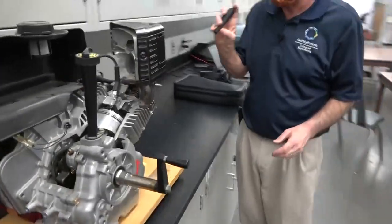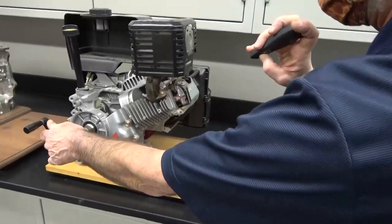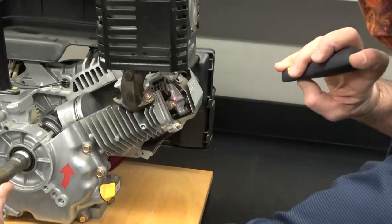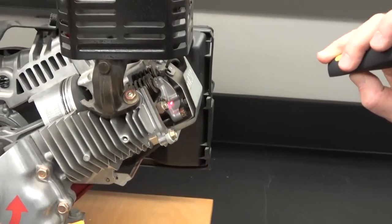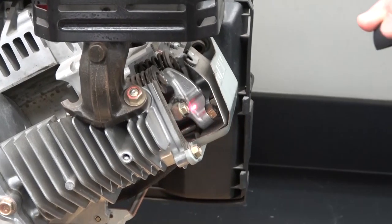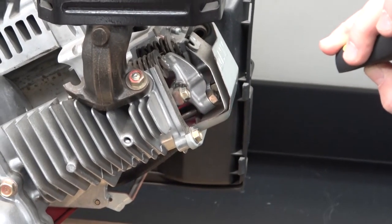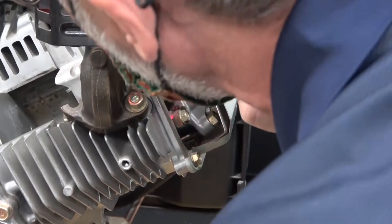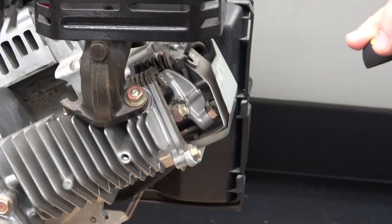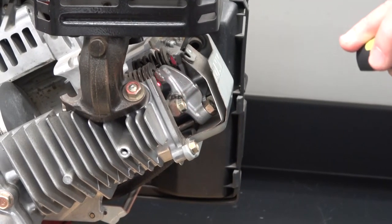If we come around to this side, we can see the top portion of the valve train. Here's the rocker arms and the push rod. As we go through the exhaust—this is actually the exhaust stroke now—you can see the push rod has moved the rocker arm and that's actually opened the exhaust valve.